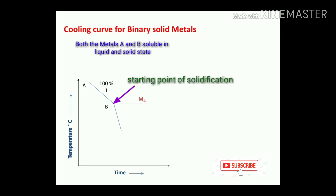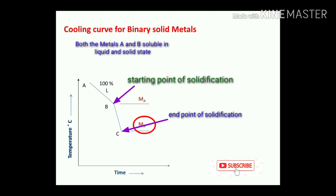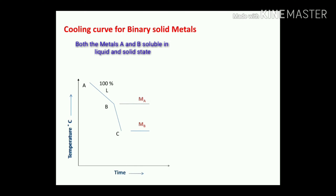With further cooling, we reach point C, which corresponds to the melting point of metal B — the lower melting point — and this is considered the end point of the solidification process. Point B is the starting point of solidification for binary solid metals, and point C is the end point. In the B to C region, there are two phases present: liquid plus solid.